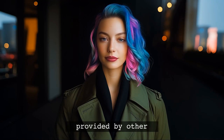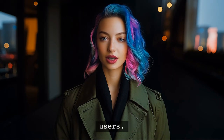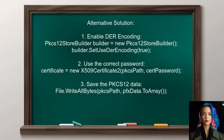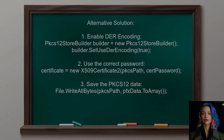Let's look at the answers provided by other users. An alternative solution involves addressing the undefined length ASN1 issue by utilizing the PKCS12StoreBuilder with DER encoding enabled. The suggestion is to modify the code to ensure the certificate password is correctly applied when creating the X509Certificate2 object.